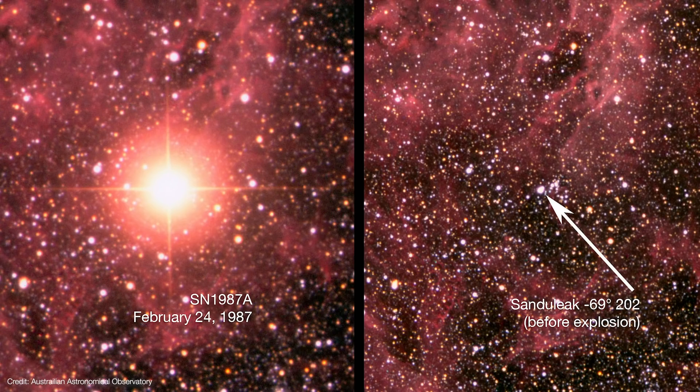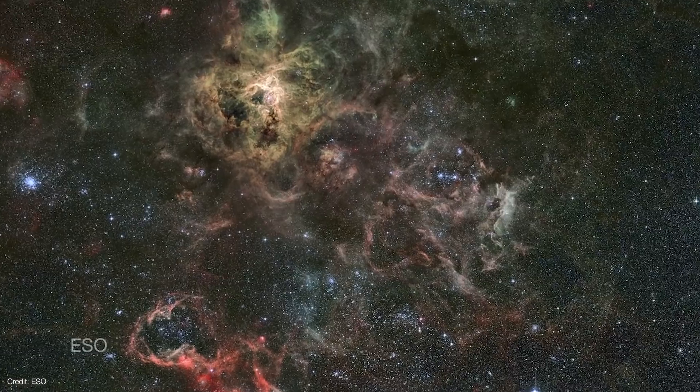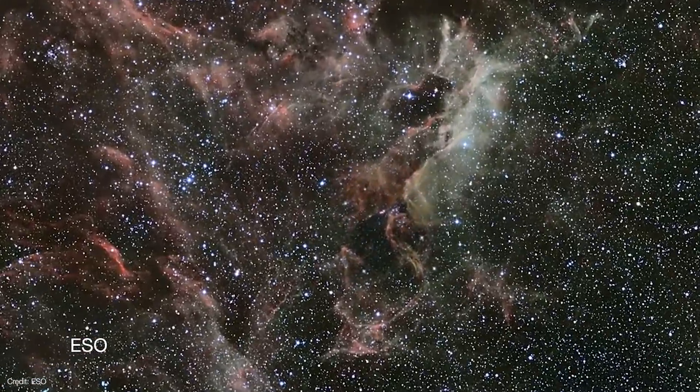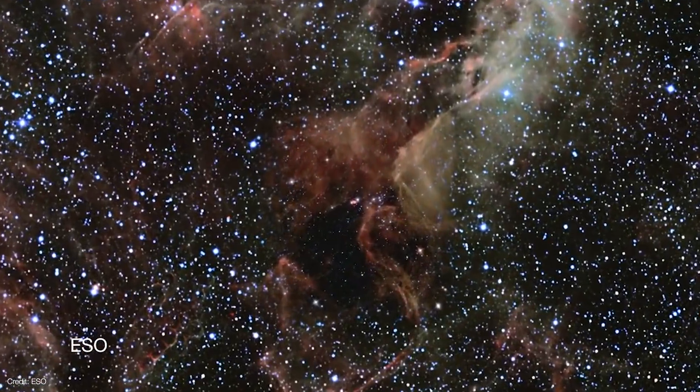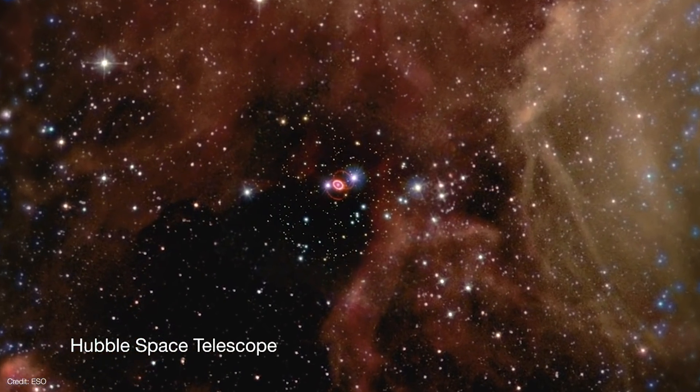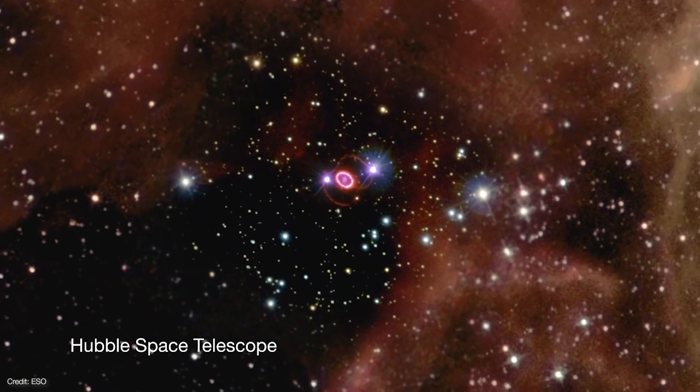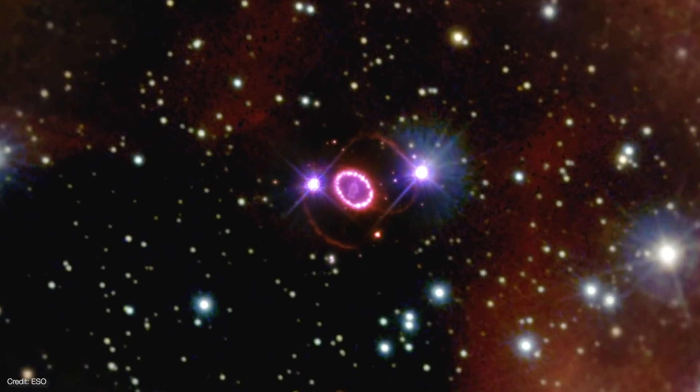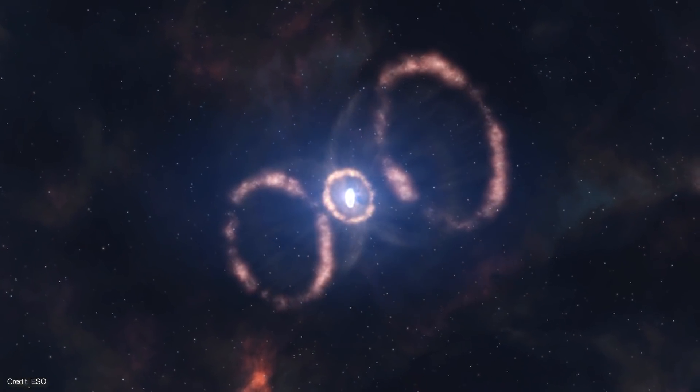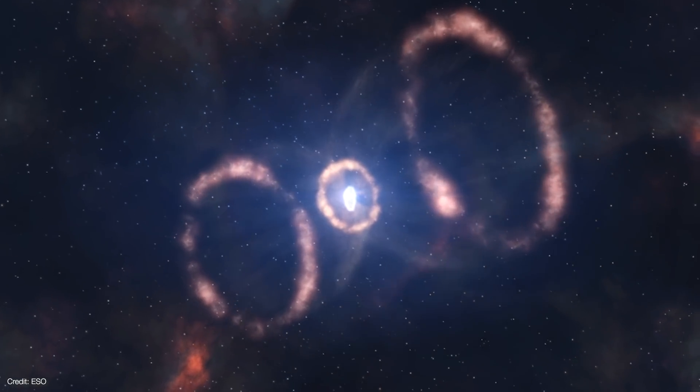The closest supernova in living memory was SN 1987A, which erupted on February 24th, 1987. But that supernova was in the Large Magellanic Cloud, which is a satellite galaxy to the Milky Way. Even though it's 168,000 light years away, the supernova could be seen without a telescope. However, you did have to know about where in the sky to look because it wasn't an unusually bright star in the sky at the time. Still, astronomers quickly got to work observing it, and they've been studying it ever since.